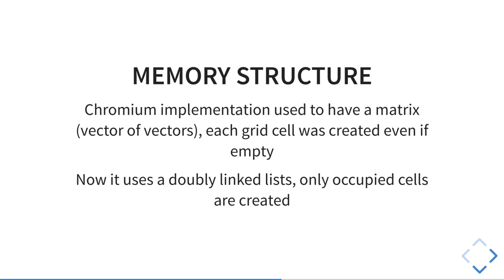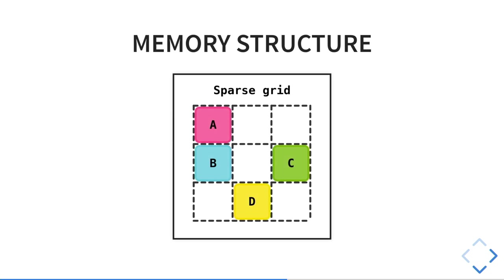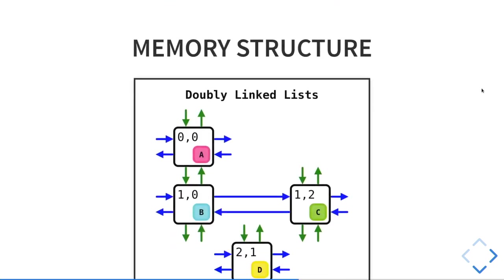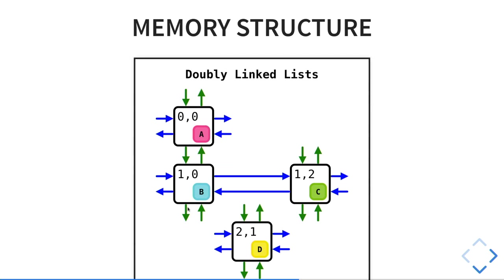There is a special thing in our Chromium implementation: we used to have a matrix — a vector of vectors. So the implementation was quite simple, but it was taking a lot of memory. Now we use a doubly linked list. Imagine a grid with only four items but nine cells. With the old memory structure, we created one cell per each grid cell. Now with the doubly linked list we avoid that. It's more complex, but we save a lot of memory — with a 100-by-100 grid, before we were creating 10,000 cells, and now we create only 40 if we have only four items. So it makes a difference.